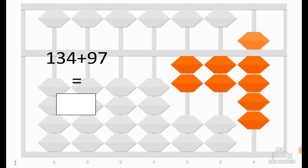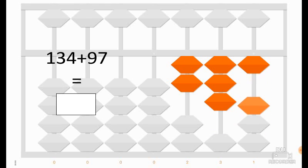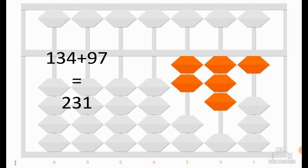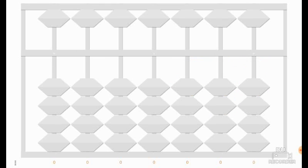After adding 90, we would like to add 7, but we cannot add 7 because it only holds 5 coins in the unit column. So 7 is equal to 10 minus 3. To add 7, we add 10 and we remove 3. And we have the result: 134 plus 97 is equal to 231.